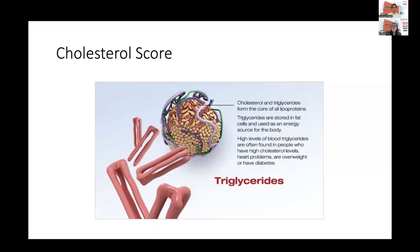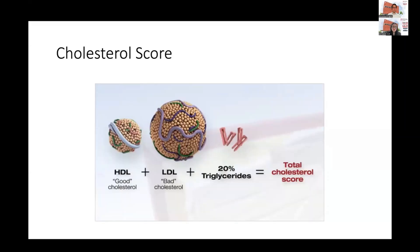Triglycerides are another measure you often see in the lipid panel. Cholesterol and triglycerides are stored in fat cells and used as an energy source. High levels of blood triglycerides are often found in people who have high cholesterol, heart problems, are overweight, or have diabetes. When we calculate the total cholesterol score, we add HDL plus LDL, then 20% of the value of the triglycerides. Depending on which lab you use, the result can be in milligrams or millimoles.